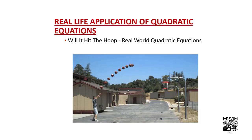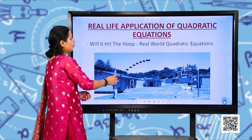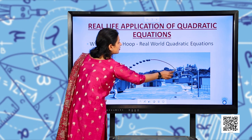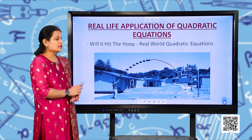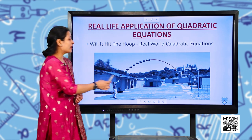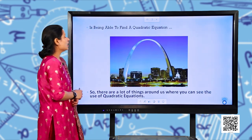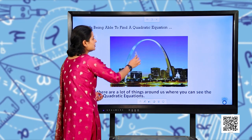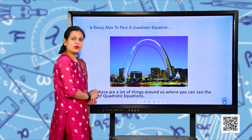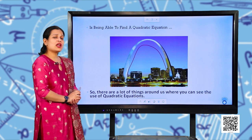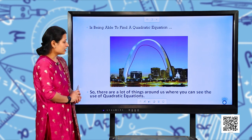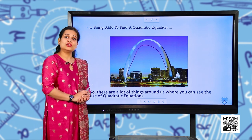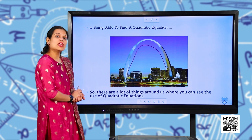Now what are the real-life applications of quadratic equations? As you can see here — will it hit the hoop or not? This is an example of a quadratic equation. The path becomes a parabola. So there are a lot of things around us where we can see the use of quadratic equations.